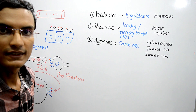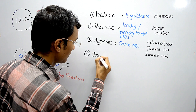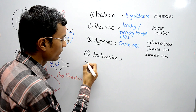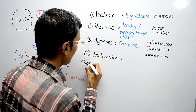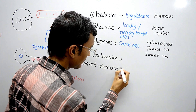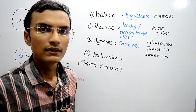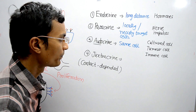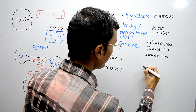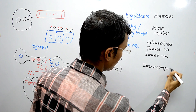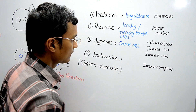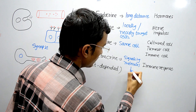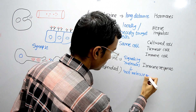The fourth type is juxtacrine signaling, also known as contact-dependent signaling. In this type of cell signaling, there is no release of signaling molecules into extracellular space. Instead, the molecules are held on the plasma membrane of the cell. This type of signaling is seen during the immune response.